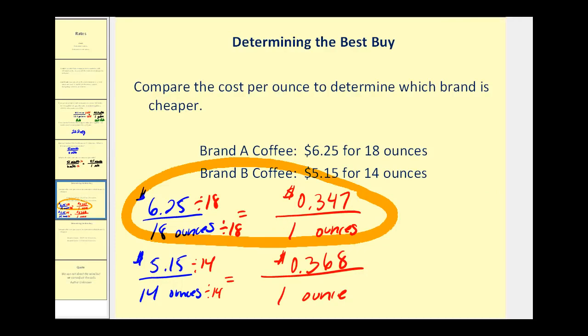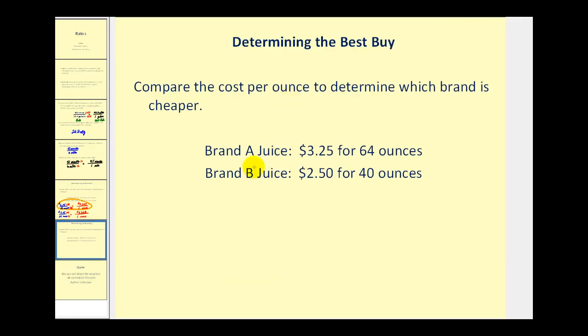Let's go ahead and take a look at another one of these. Here we're comparing two brands of juice, where the first rate is $3.25 for 64 ounces, and brand B is $2.50 per 40 ounces. So again, our unit rate would be the cost per ounce.